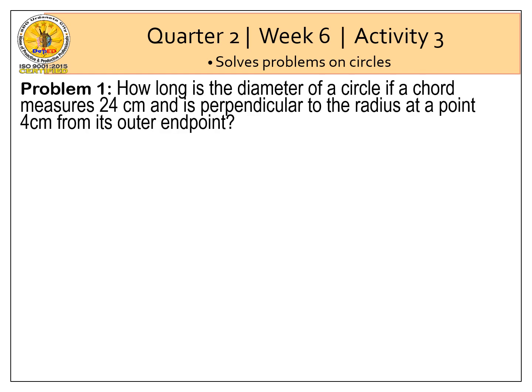Let's have problem number 1. How long is the diameter of the circle if a chord measures 24 cm and is perpendicular to a radius at a point 4 cm from its outer endpoint? In the figure, we have two intersecting chords where one chord is a diameter.